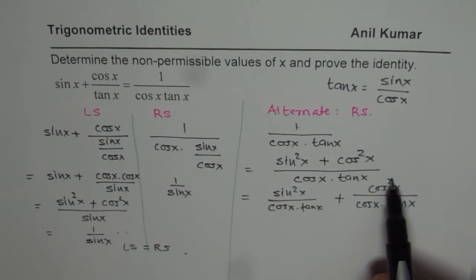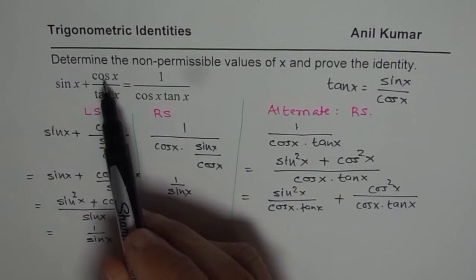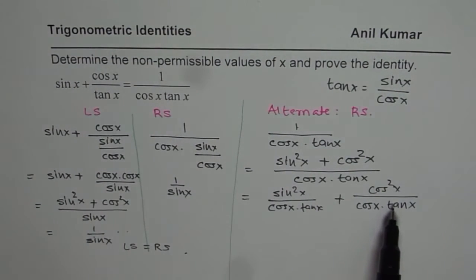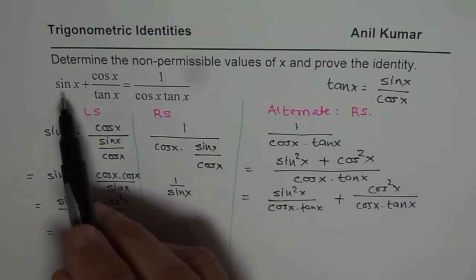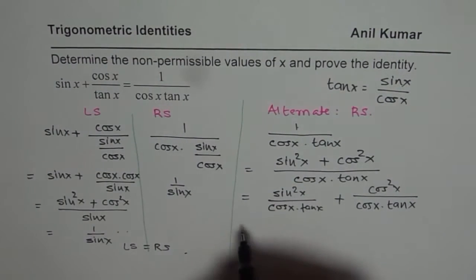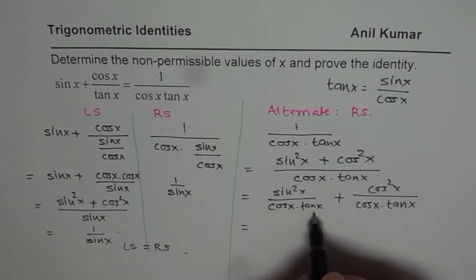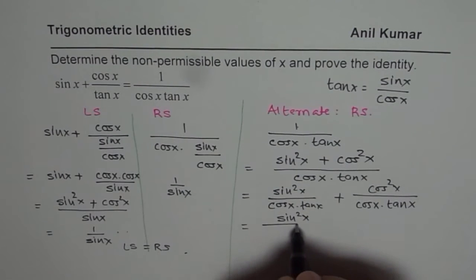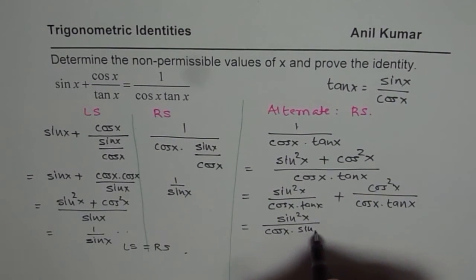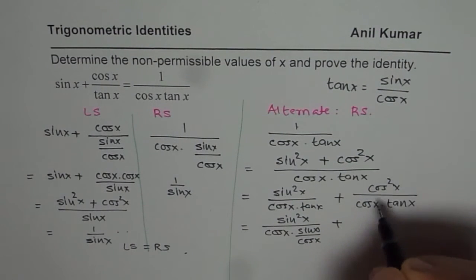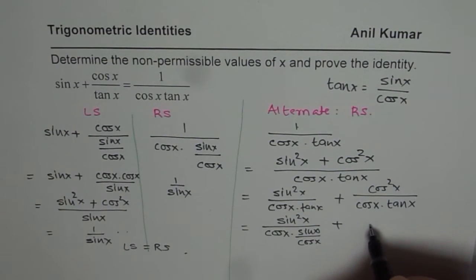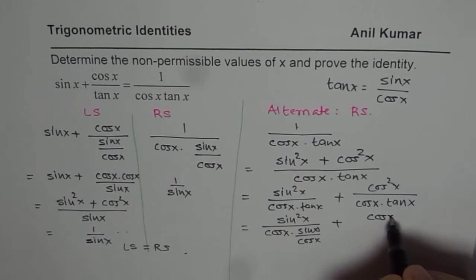Now, you can see clearly here, if I cancel cos and cos, we get cos x over tan x. And on this side, we just need sin x. So it is good practice to change tan as sin over cos. So we get here sin square x over cos x times sin x over cos x plus, we'll cancel cos, and so we'll get cos x over tan x.